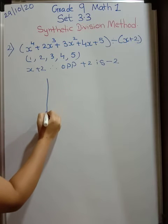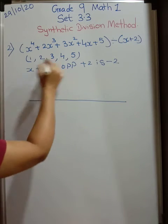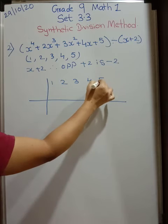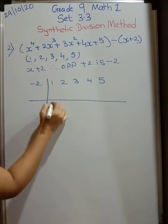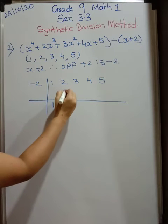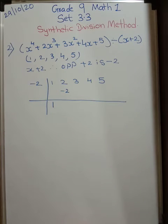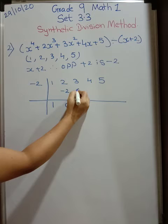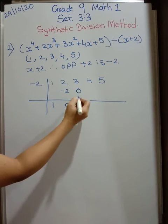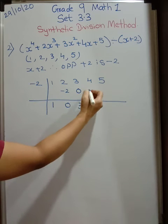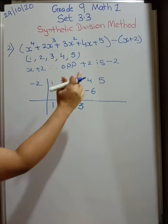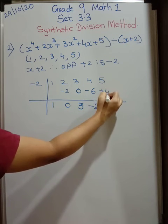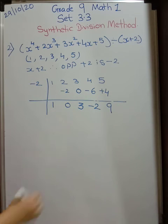Now draw a line. Here also we are going to draw a line and write all the coefficients. 1, 2, 3, 4, 5. Here you are going to write minus 2. First will be 1 as it is. Now see minus 2 into 1 is minus 2 over here. Now 2 minus 2 you are going to get 0. Now multiply. 0 into minus 2 is 0. 3 minus 0 or plus 0, you will get only 3. 3 into minus 2 is minus 6. Now minus 6 plus 4 will be minus 2. Minus 2 into minus 2 is plus 4. 5 plus 4 is 9. Very easy.